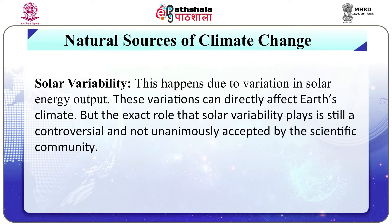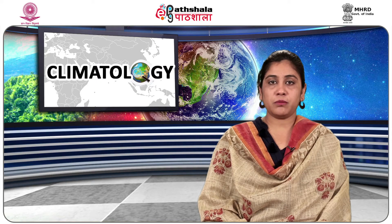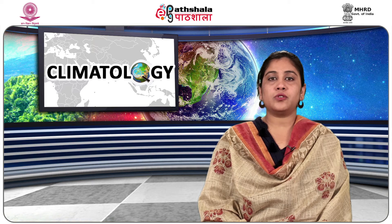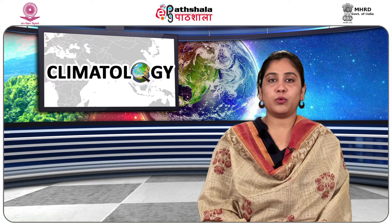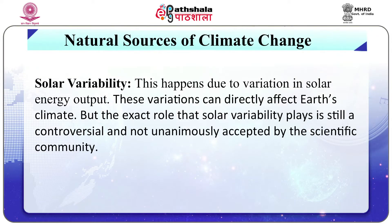Solar variability. This happens due to the variation in solar energy output. The energy output of the sun varies slightly over time, and this has been measured by data obtained through satellites. The variation in total output has been observed throughout the day as well as during the solar cycle, and this variation can directly affect Earth's climate. However, the exact role that solar variability plays is still controversial and not unanimously accepted by the scientific community.